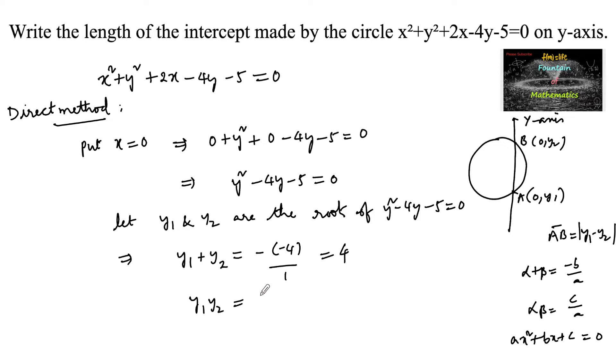Product of the roots y₁y₂ is equal to c/a, that is -5/1, so we have -5.